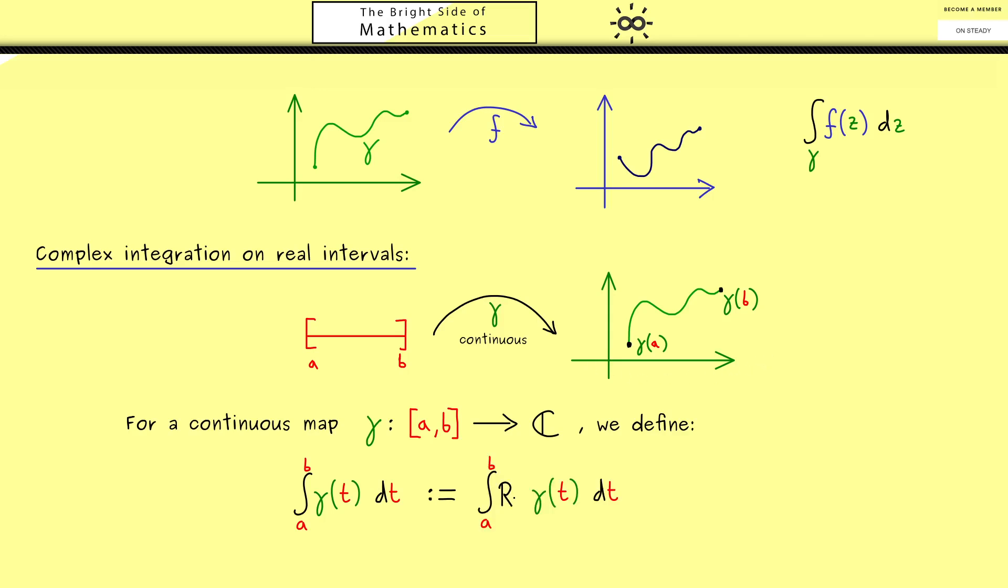We can just construct it with two real integrals. Namely we just take the real part of the function gamma and then we add i times the imaginary part. In other words we just look at the two components the function gamma has. And then we consider them separately in the integral. And in the end we put them back together to get a complex number out. And here please note these two integrals here are ordinary Riemann integrals as we have introduced them in real analysis. More concretely they are well defined because we have continuous maps.